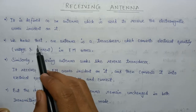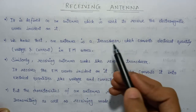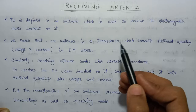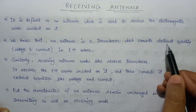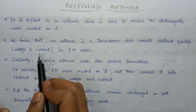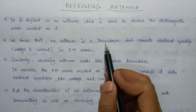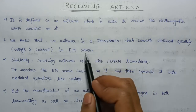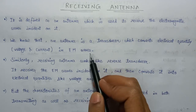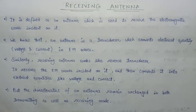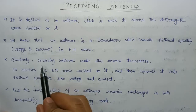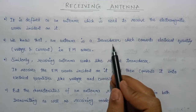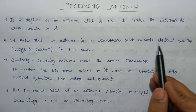Since we know that an antenna is just like a transducer, the functionality of a transducer is that it generally converts the electrical quantity into the electromagnetic wave. Here, the electrical quantity represents the voltage and current quantities only. So a transducer is a device capable of converting electrical quantities into electromagnetic waves, and an antenna works like this transducer.